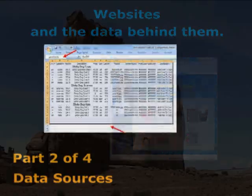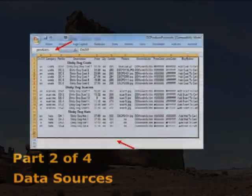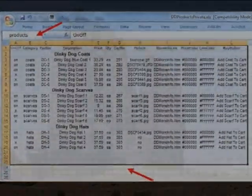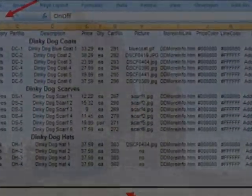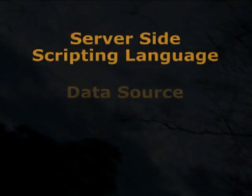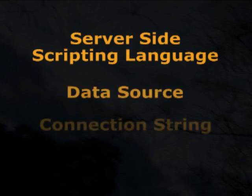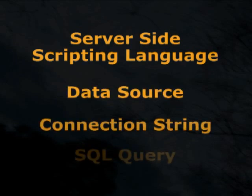To be able to utilize data from a data source within a web page, there are four elements that must work in concert with one another: you must be using a server-side scripting language, a properly formatted data source, the correct connection string, and an SQL query. One without the other yields nothing. So let's explore how all of these elements interact with one another.